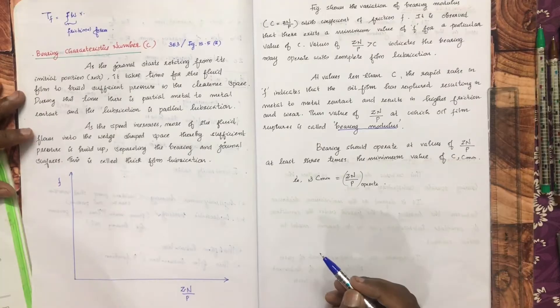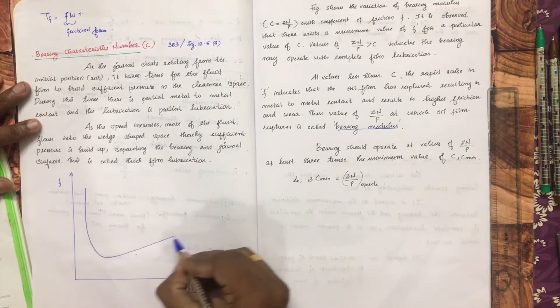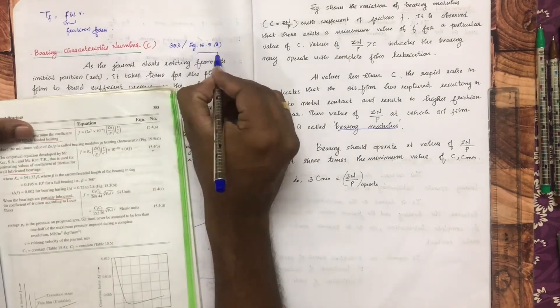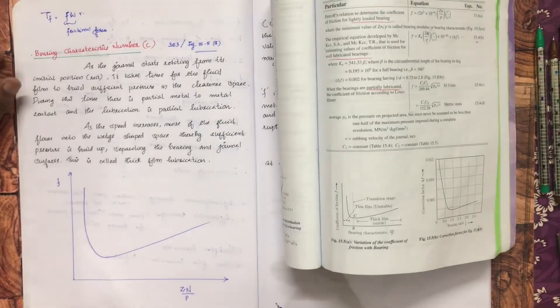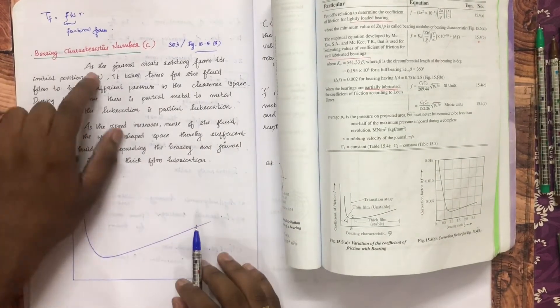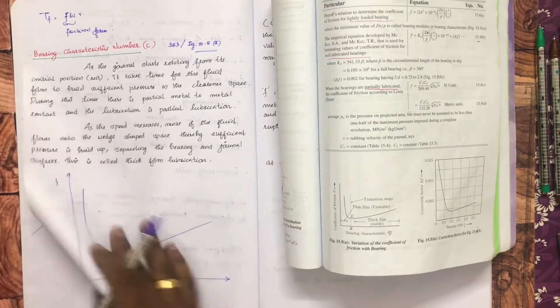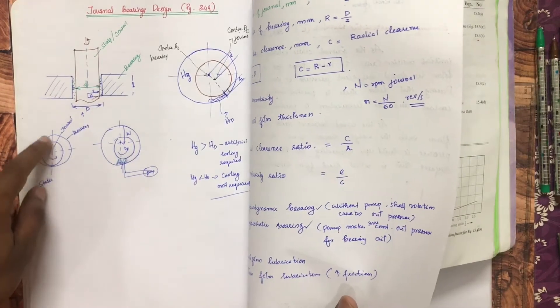The bearing modulus is a specific value. If you have a plot, it should look like this — this is Figure 15.5a. As the journal starts rotating from its initial static position, it begins to rotate from rest.